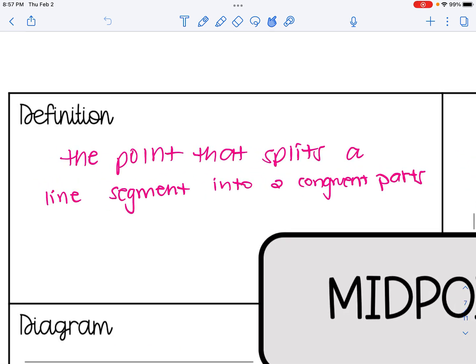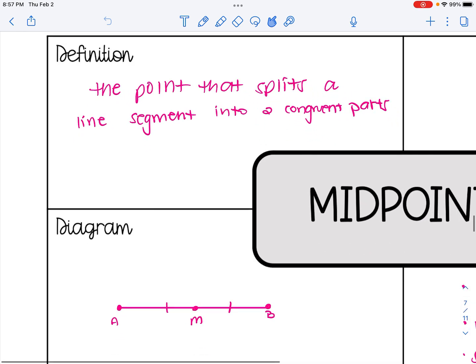A midpoint is the point that splits a line segment into two congruent parts. If we look at a diagram here, you can see point M is the midpoint of line segment AB because it splits it into two congruent parts since we can see AM and MB are congruent to one another.